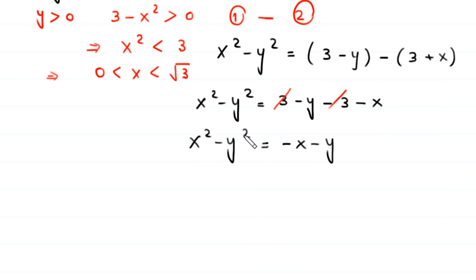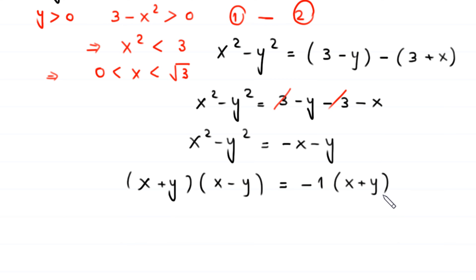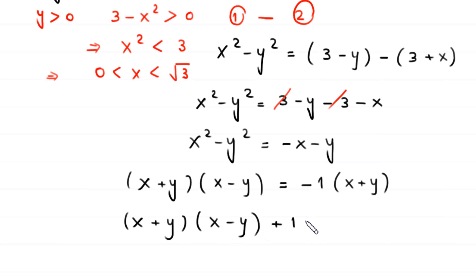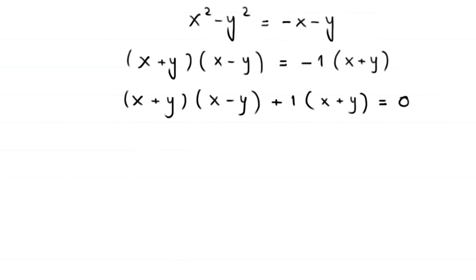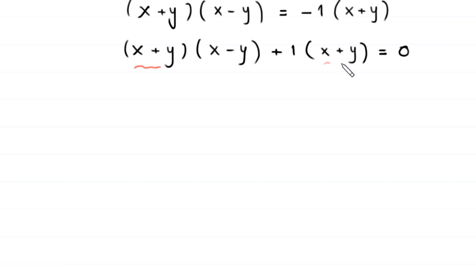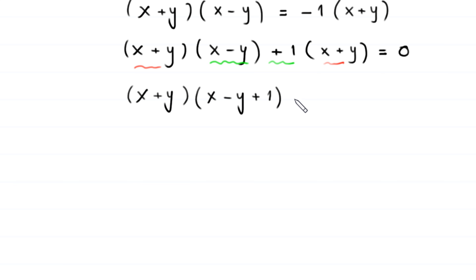The left side x squared minus y squared factors as (x plus y)(x minus y). Factoring negative 1 from the right side gives negative (x plus y). Moving everything to the left: (x plus y)(x minus y) plus (x plus y) equals 0. Factoring out the common term (x plus y) gives (x plus y)(x minus y plus 1) equals 0.